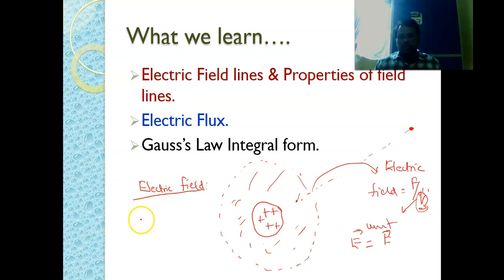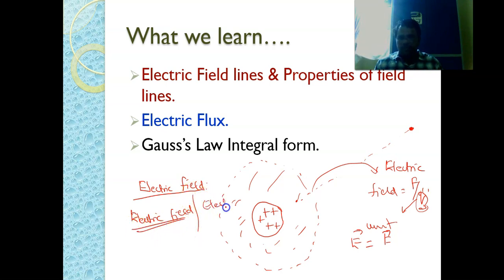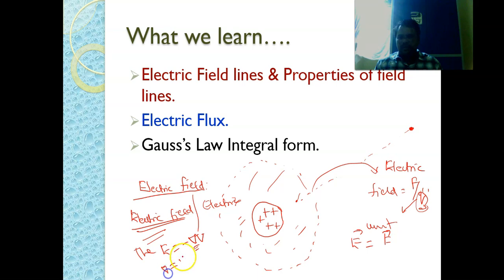One more thing we discussed in that class: the relation between electric field and electric potential. The relation we can write as E = −∇V, where ∇ is the del operator. The del operator is written as i ∂/∂x + j ∂/∂y + k ∂/∂z, where i, j, k are unit vectors in x, y, z directions respectively.